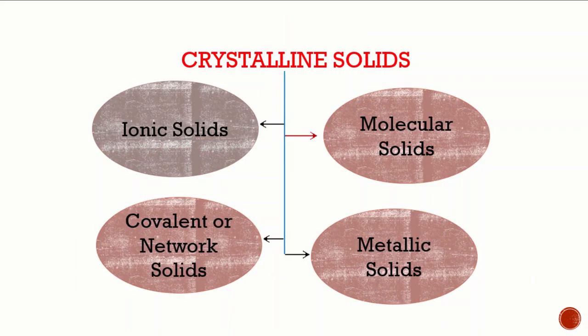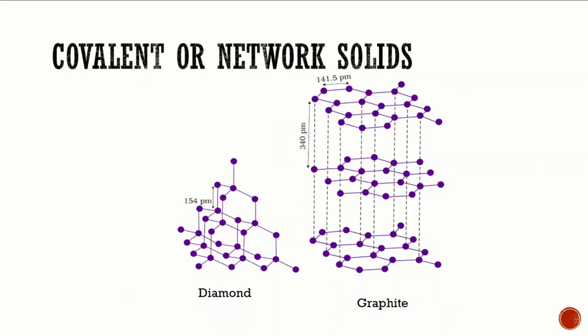Covalent or network solids are those crystalline solids in which the constituent particles are non-metal atoms linked to adjacent atoms by covalent bonds throughout the crystal. As a result, a network of covalent bonds is formed and they form giant molecules. One of the most common examples is diamond, in which carbon atoms are linked together by covalent bonds. As covalent bonds are strong and directional in nature, these solids are very hard and brittle.